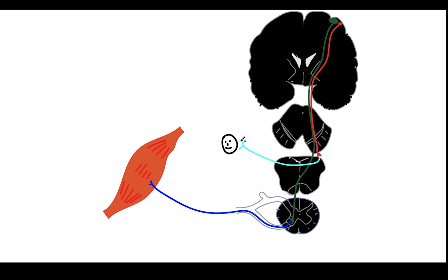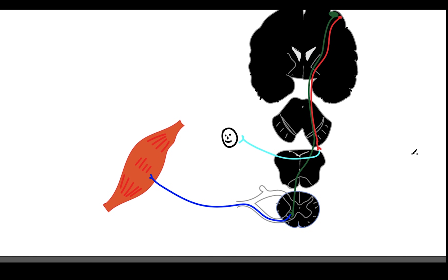Under normal conditions, the upper motor neurons regulate the lower motor neurons. So if the upper motor neurons are damaged for some reason, there will be certain changes in the working of the lower motor neurons. That is the next thing we are about to discuss.